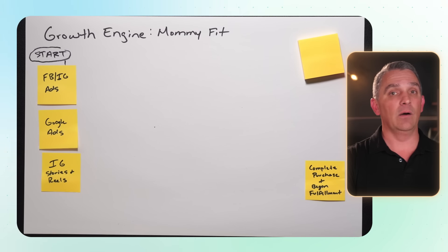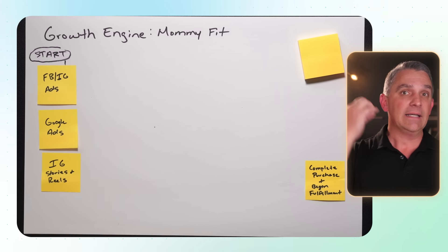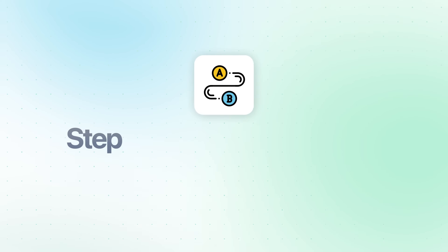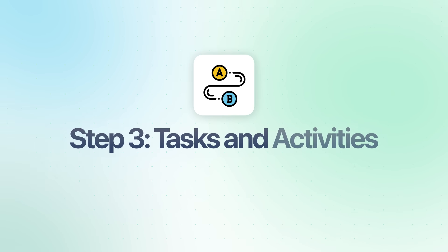Step three is to brainstorm the tasks and activities between the start and the end. There are really only two shapes you need to know about. Shape number one is the square — a simple task or activity, something happened. The second shape is the diamond, which we use when there's a gateway or decision point — in other words, a fork in the road. The way we map this is by asking one question over and over again: then what?